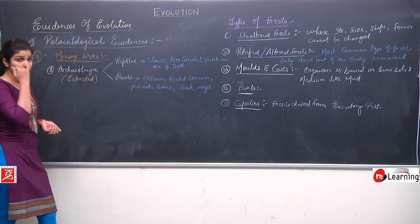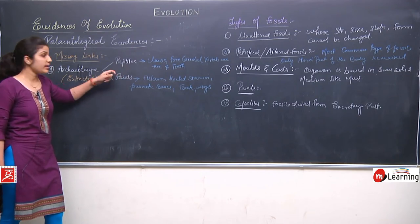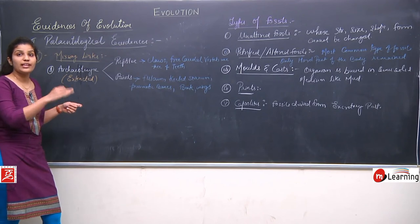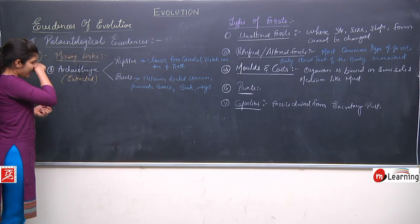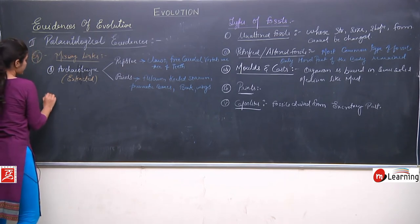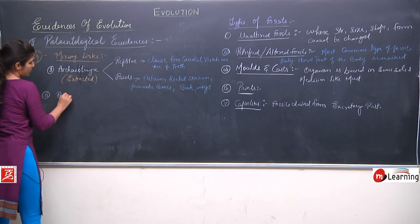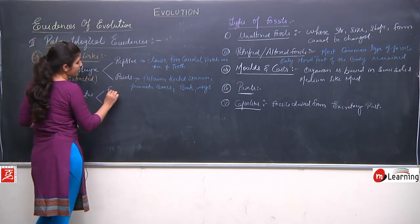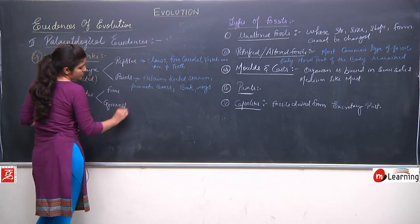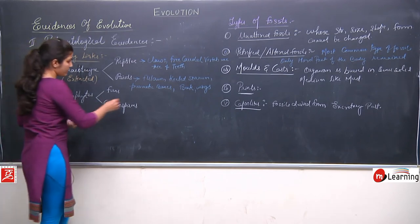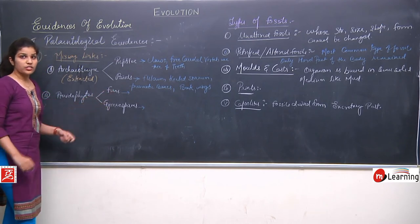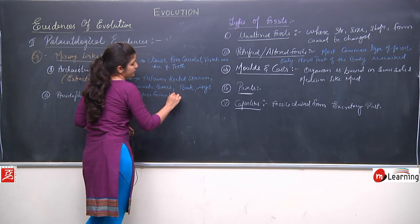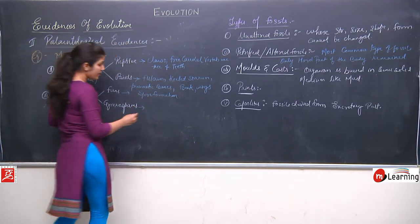The evidences show that first reptiles evolved, then came the connecting link Archaeopteryx, and from Archaeopteryx birds evolved — showing the evolutionary traces between vertebrates. The next connecting link is pteridophytes, which is the missing link between ferns and gymnosperms.